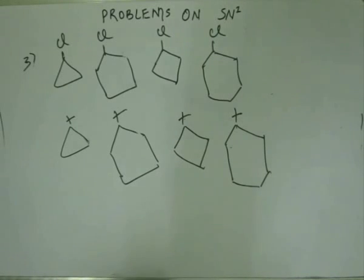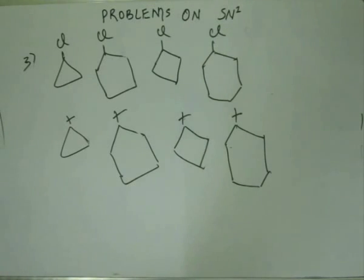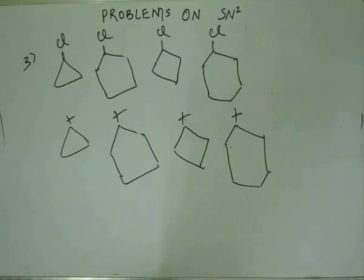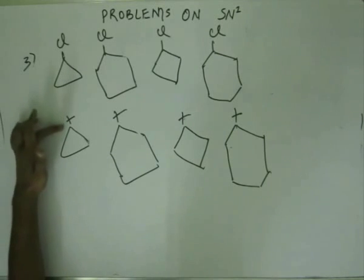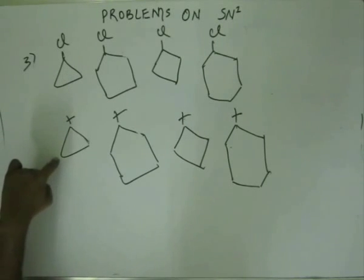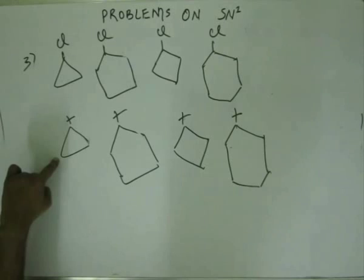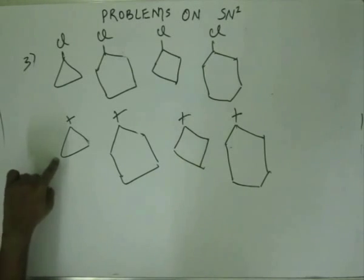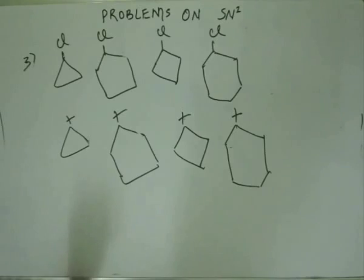Now here they are. Based upon different effects we will have to decide upon their stability. Starting with resonance — resonance doesn't seem to be operating in any of the four, because adjacent to the plus charge we don't have an electron-rich side. We don't have a lone pair, we don't have a pi bond, we don't have a negative charge. So there will be no resonance in any of the four.